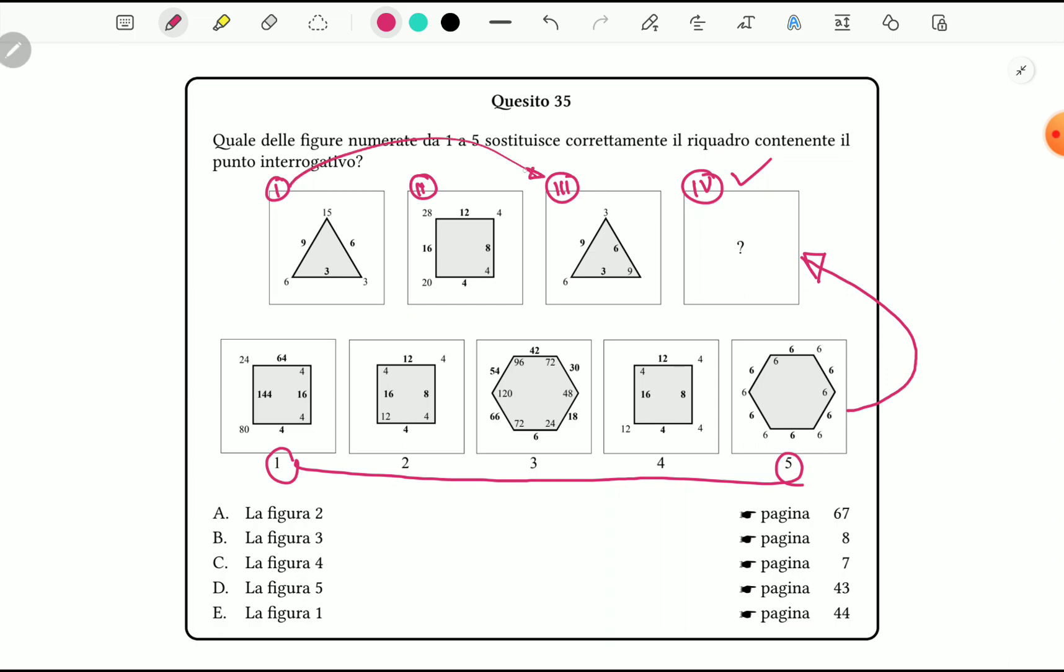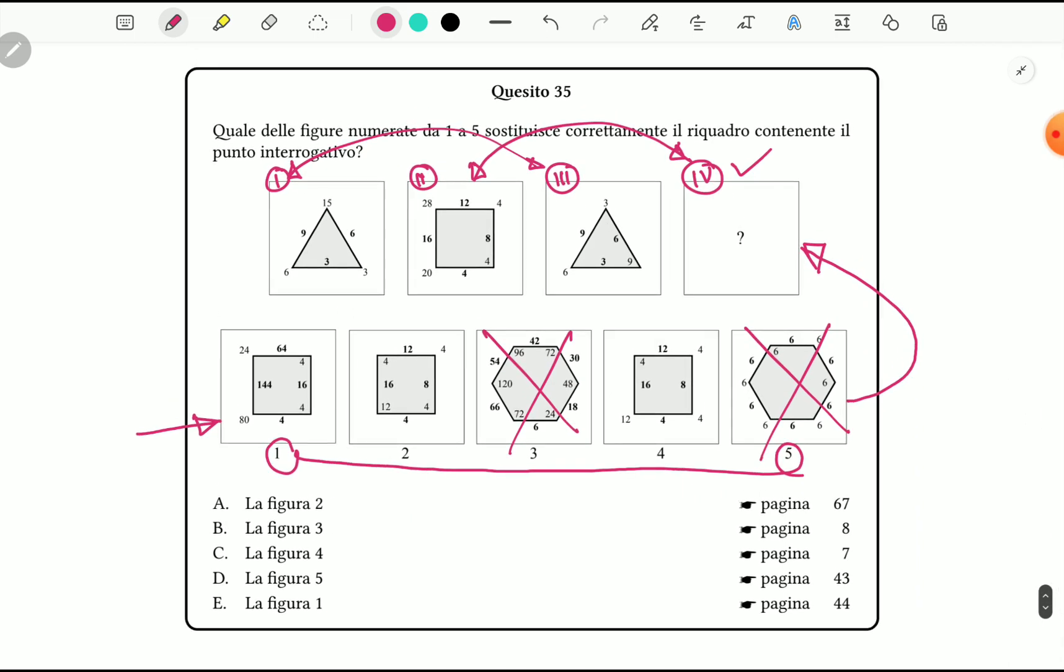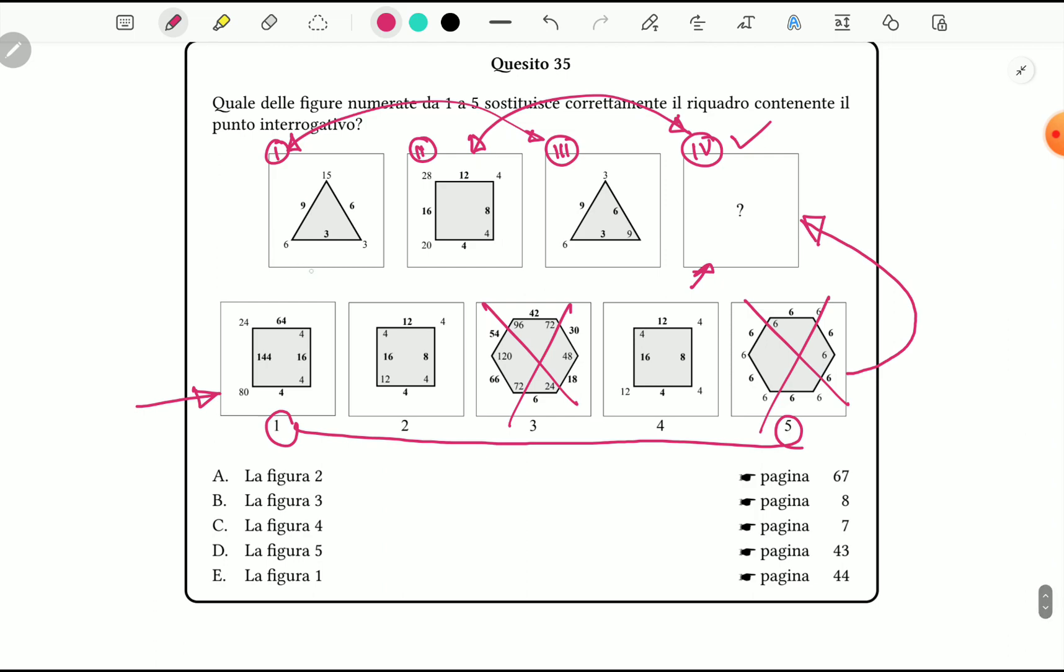If we look at number one and three, these two boxes contain triangles. Therefore, we can say number two and four would be a square. Moreover, in the options we can see any triangle. Therefore, it confirms that the right answer would be from the squares, not from the hexagonal or from the triangle.